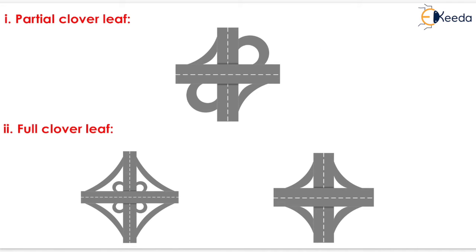The various types of grade separated intersections include the partial cloverleaf, where the cloverleaf is provided partially, and the full cloverleaf, where the cloverleaf is provided fully. If a vehicle tries to move from one road to another, it will use the corresponding ramp. Vehicles moving to the bottom road use the appropriate leaf of the cloverleaf.